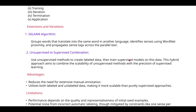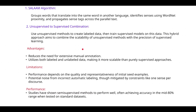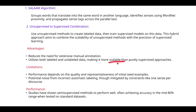Now let's discuss the advantages of semi-supervised systems. First, it reduces the need for extensive manual annotation — if you don't have labeled data, it doesn't require manual annotation effort. Second, it utilizes both labeled and unlabeled data, making it more scalable than purely supervised approaches, allowing you to easily scale datasets.